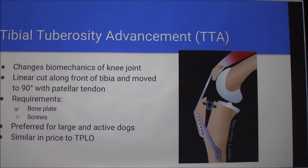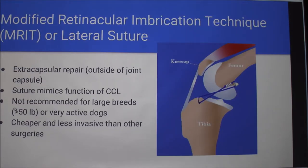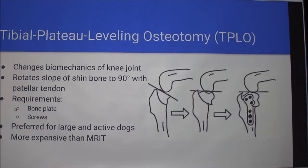Do you have any idea of the cost? It depends a lot on which clinic you're at. For the MRIT it's been about $2,000 to $3,000. For the others like the TPLO, it's three thousand and up — it depends a lot on the area, so it's hard to say exactly. It's all very delicate surgery.